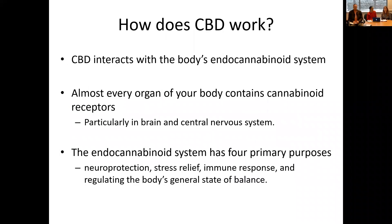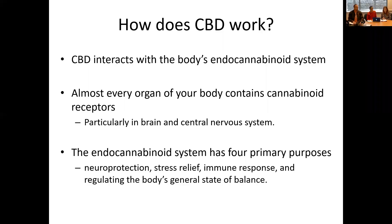How does CBD work, or how do humans interact with CBD? All humans have an endocannabinoid system, and almost every single organ in our body has cannabinoid receptors. These are particularly prevalent in the central nervous system and in the brain. The endocannabinoid system has four primary purposes: neuroprotection, stress, the immune response, and regulating your body's homeostasis or general state of balance.